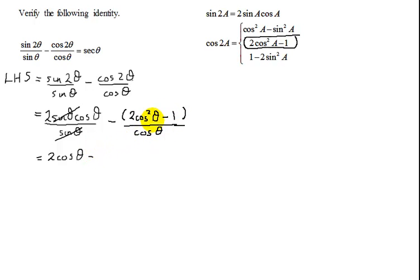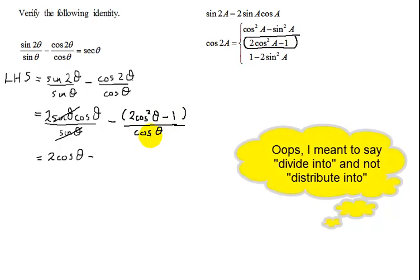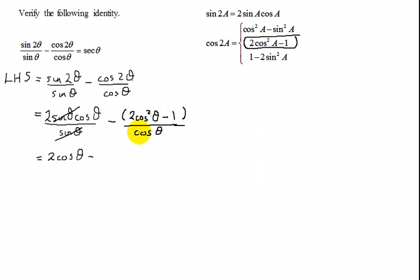Now be careful at this stage I cannot reduce this cosine theta with one of these because the cosine theta has to distribute into both of them. So what I'm going to do is I'm going to break this second term up into two terms. I'm going to have minus the quantity 2 cosine squared theta over cosine theta minus 1 over cosine theta.